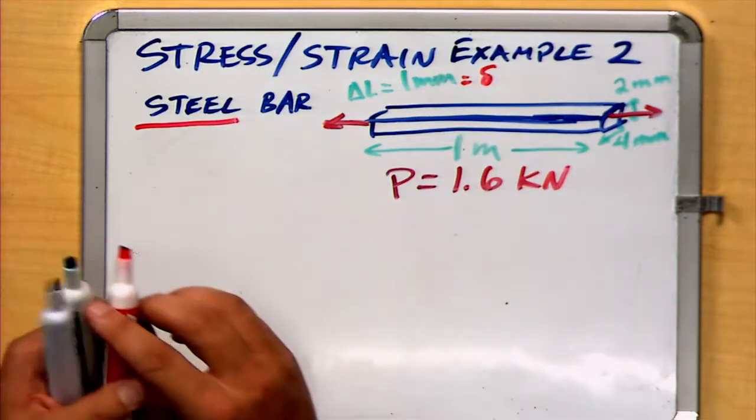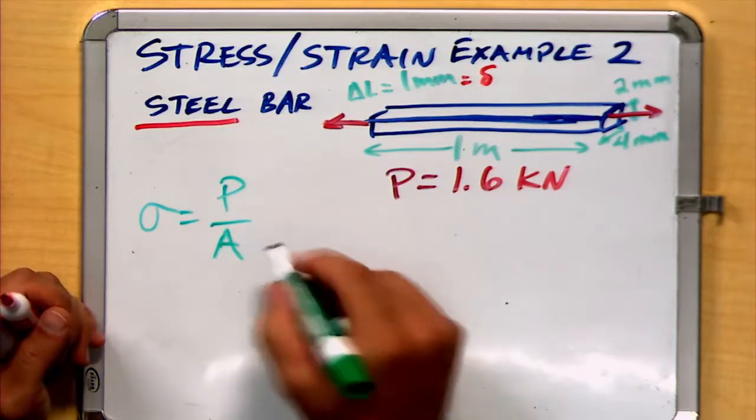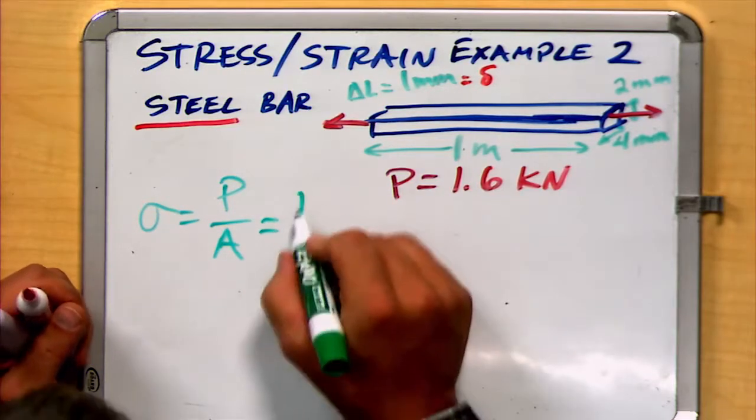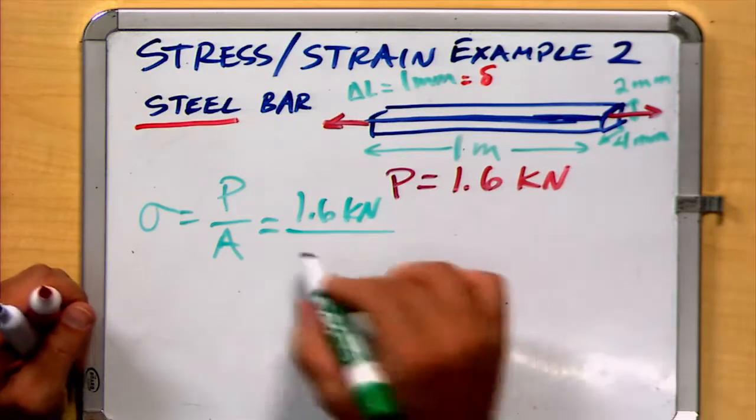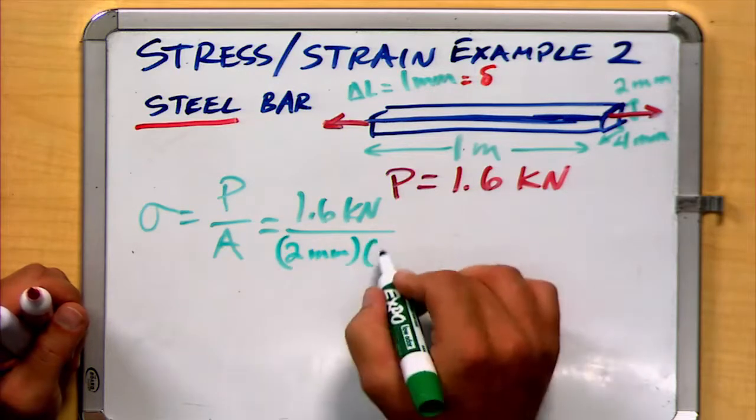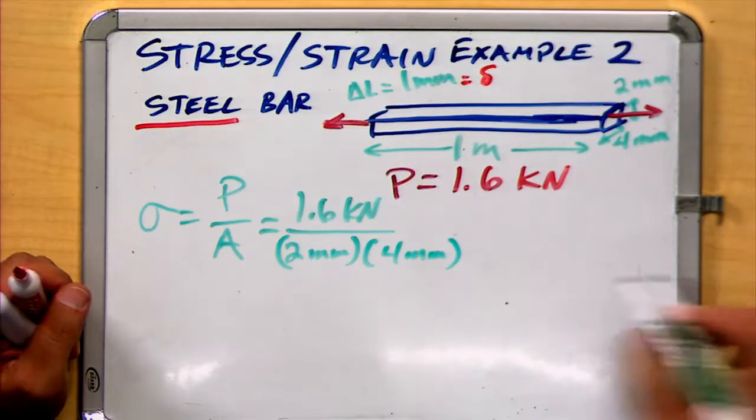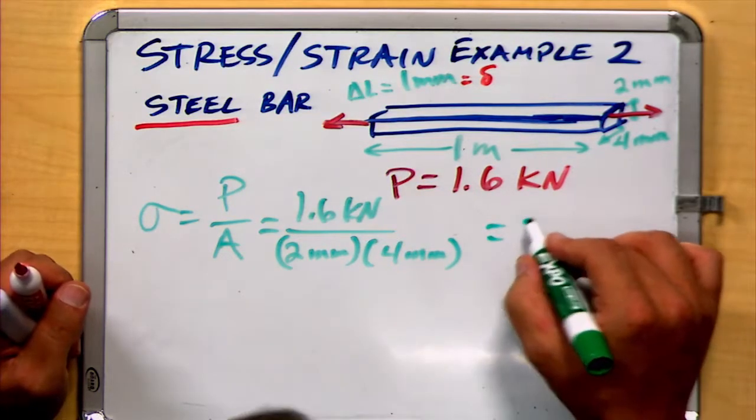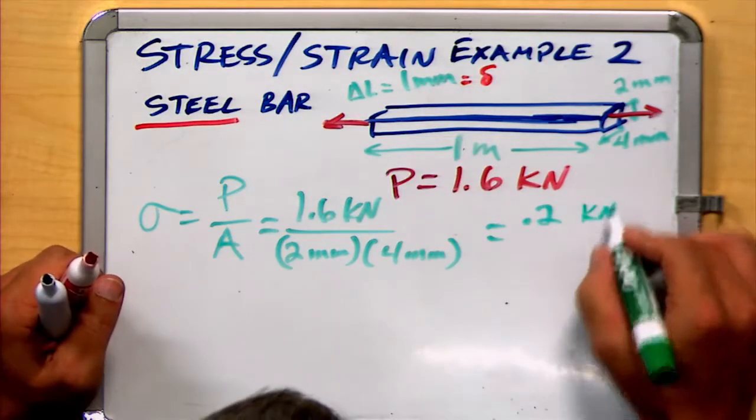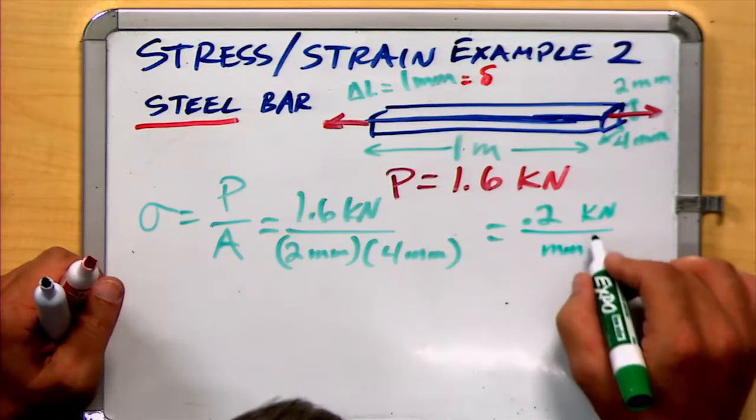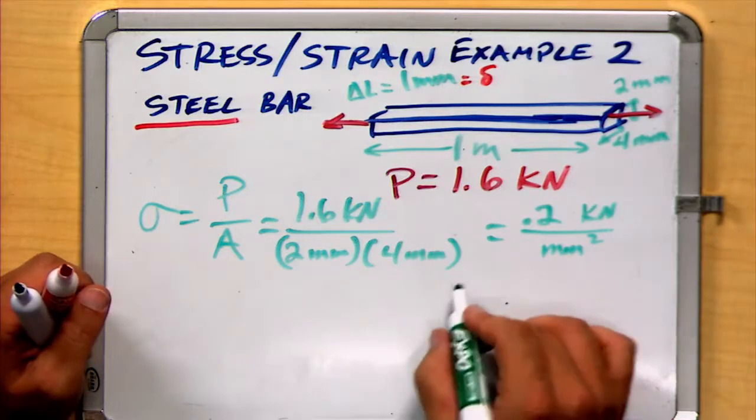First, we recognize that our stress is equal to the force applied divided by the cross-sectional area. Well, that's our 1.6 kilonewtons applied to an area of 2 millimeters times 4 millimeters. Well, 2 times 4 is 8. The 1.6 divided by 8 gives us 0.2. And then our units are in kilonewtons per square millimeter.